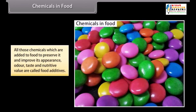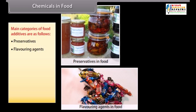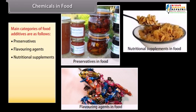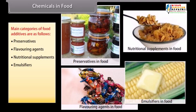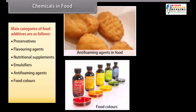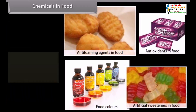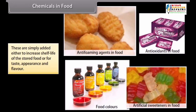All those chemicals which are added to food to preserve it and improve its appearance, odour, taste, and nutritive value are called food additives. Main categories of food additives are: preservatives, flavouring agents, nutritional supplements, emulsifiers, anti-foaming agents, food colours, artificial sweeteners, and antioxidants. These are added either to increase the shelf life of stored food or for taste, appearance, and flavour.